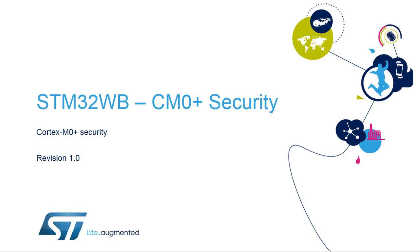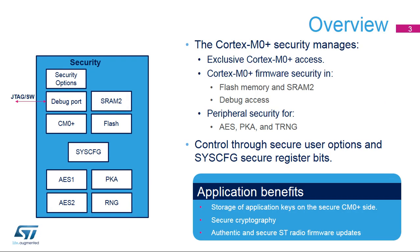Hello, and welcome to this presentation of the STM32WB Cortex-M0 Plus Security Features. The Cortex-M0 Plus Security manages the firmware and peripheral security and is used to authenticate the ST Radio firmware and allows the secure handling of cryptographic keys. The Cortex-M0 Plus Security uses secure options to control flash memory, SRAM2, and debug security.